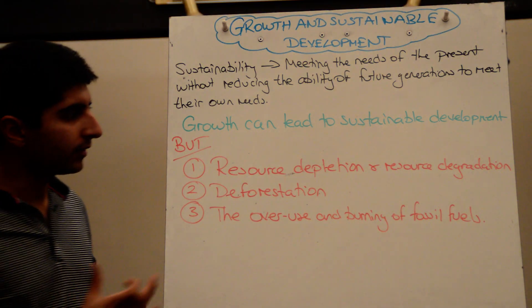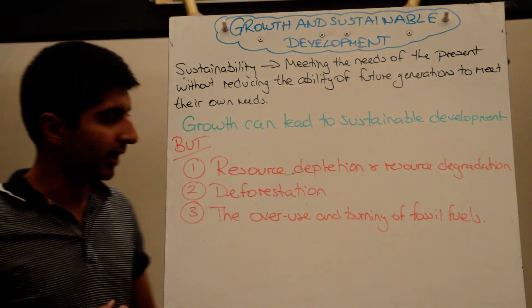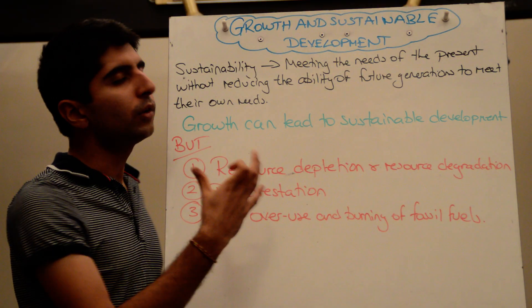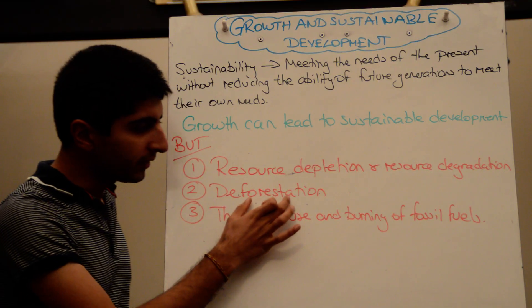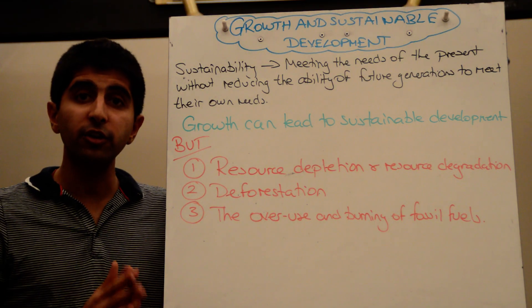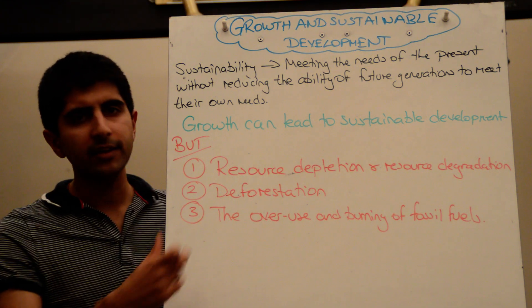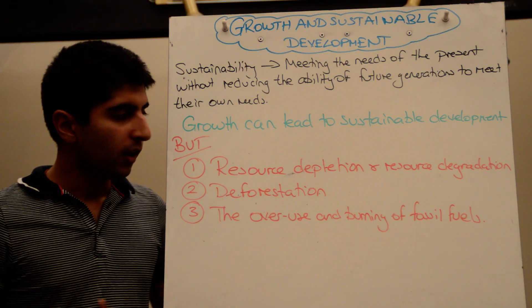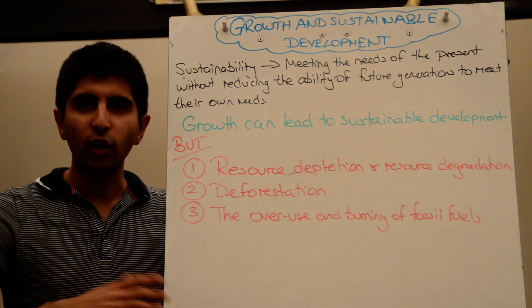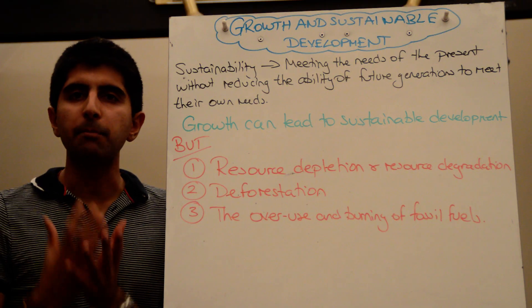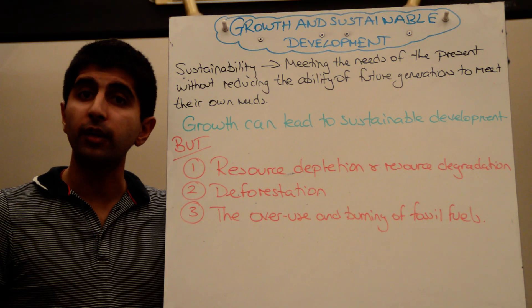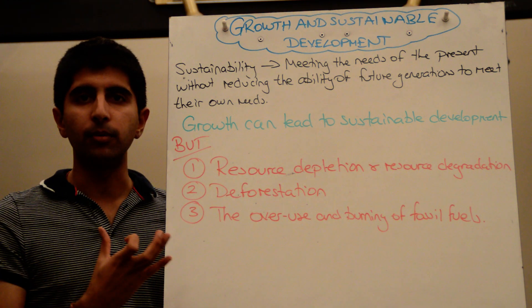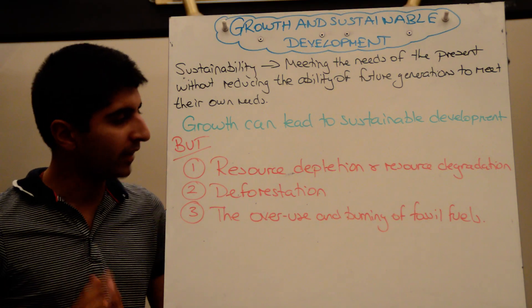These are big arguments against the most unsustainable forms of development, as they harm welfare and reduce happiness in the economy. Deforestation is another way in which production can be unsustainable. Firms involved in logging, paper production, or clearing forests for farming create major negative externalities such as soil erosion, loss of biodiversity, and greater risks of flooding — all suffered by third parties. If deforestation keeps taking place in the over-pursuit of growth, that is unsustainable in the long term.